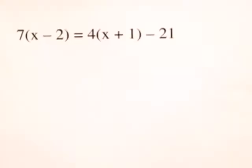For this problem, let's solve the linear equation. We have 7 times the quantity x minus 2 equals 4 times the quantity x plus 1 minus 21.